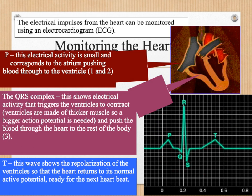The ECG produces an image known as the PQRST complex. At P we get a very small electrical activity as the blood is pushed through from the atrium down into the ventricles. At the major QRS complex the electrical activity is much greater as it causes the ventricles to contract — the ventricles are much thicker as they push blood around the lungs and the rest of the body, so a much larger action potential is needed. Finally at T the ventricles become repolarised so that the heart can beat again; if this step didn't happen then the heart would be unable to beat again.